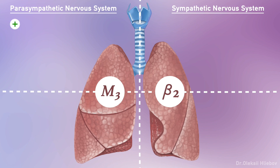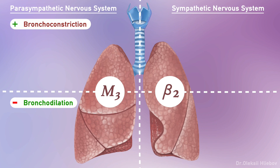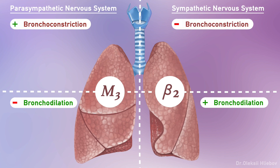Excitation or stimulation of M3 cholinergic receptors causes bronchoconstriction, while blockade of M3 cholinergic receptors causes bronchodilation. Stimulation or excitation of beta-2 adrenergic receptors causes bronchodilation, and blockade of beta-2 adrenergic receptors causes bronchoconstriction.